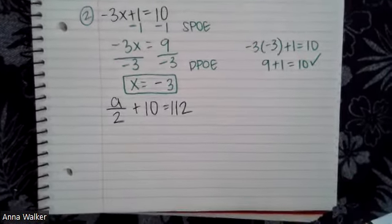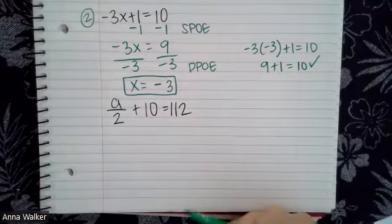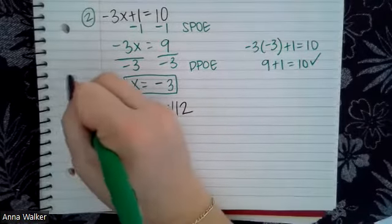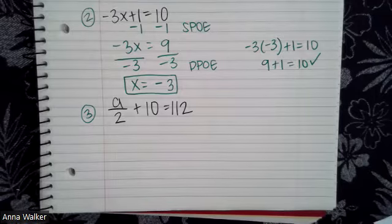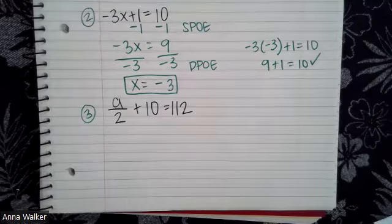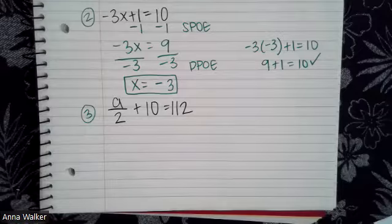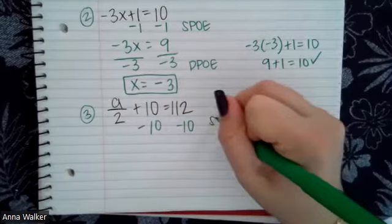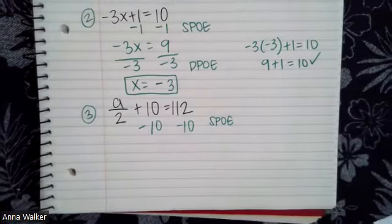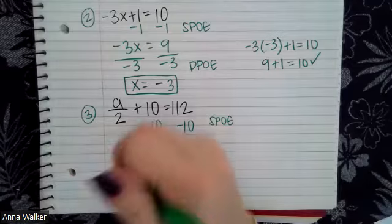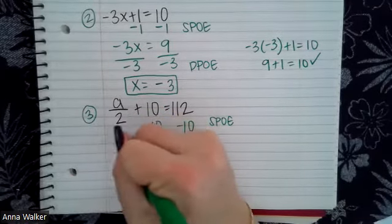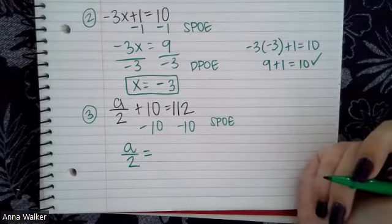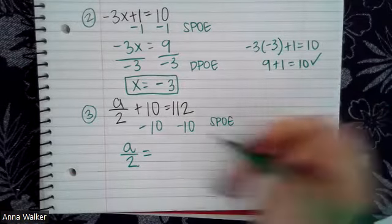Let's look at the last problem, where we're going to use a different property of equality we haven't used yet. On number three, we have a divided by two plus 10 equals 112. I do not see any like terms to combine. So I'm going to get rid of the constant — it's being added, so I'll use the subtraction property of equality, or ESPO. Subtracting 10 from both sides, I'm left with a over two is equivalent to 102.